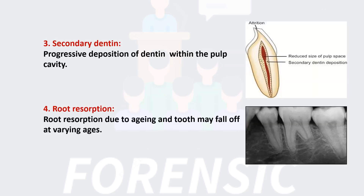The third criterion is Secondary Dentin — dentin within the pulp cavity decreasing its size. In this image we can see the reduced size of the pulp space due to secondary dentin.